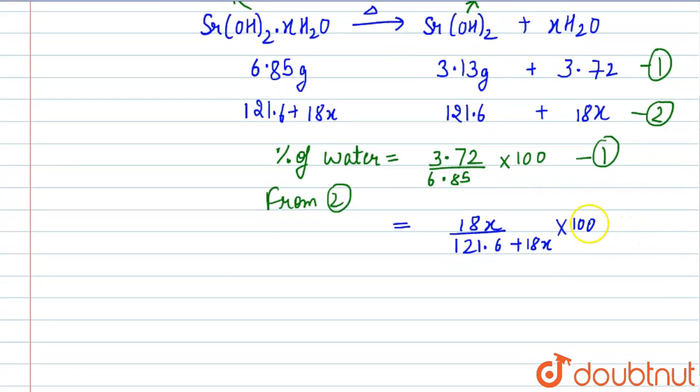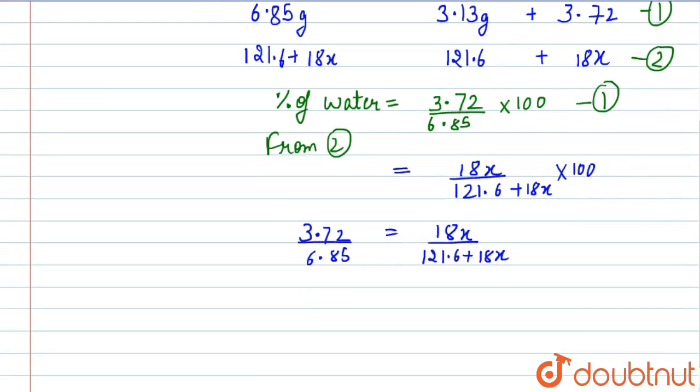Now we will equate these equations: 3.72 upon 6.85 equals 18x upon 121.6 plus 18x. From here we will find the value of x, which will be equal to 8. After solving, we get x equals 8.